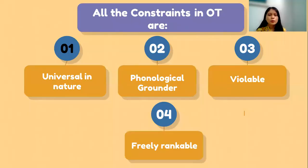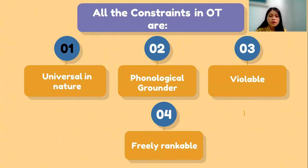When we talk about constraints in OT, there are four properties. First, they are universal in nature. Second, they are phonologically grounded. Third, they are violable. Fourth, they are freely rankable.